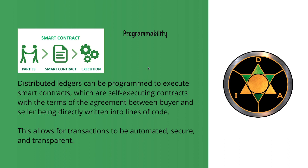The immutability characteristic means this code cannot be changed. A lot of blockchains are now incorporating the possibility to actually write smart contracts that will be triggered based on the occurrence and satisfaction of certain conditions between multiple parties. Ultimately, this allows a transaction to be automated but in a secure and most importantly transparent way.